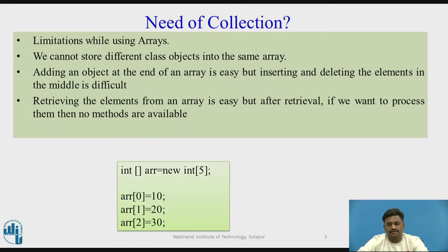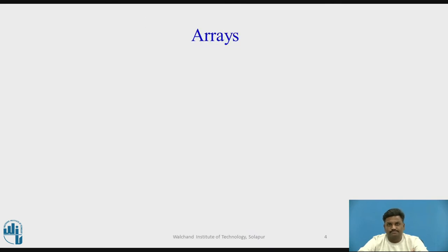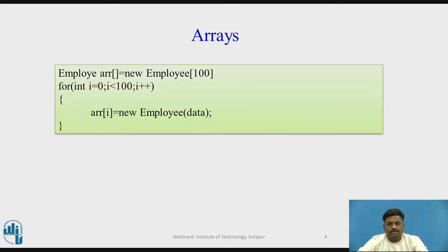This is how we usually declare arrays: int array[] = new int[]. You store elements at the 0th, 1st, 2nd location and so on. If you want to store employee records and print them later, you usually require a for loop. For example, if you have 100 employee records and want to create 100 elements, this is how you do it. These limitations of arrays can be overcome using collections.